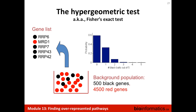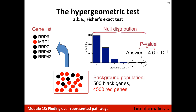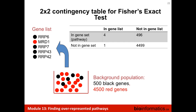In most cases you would observe zero black balls, sometimes one, and then there's a long tail of more rare events. The p-value is the sum of your observation — for example, four black out of five — plus anything more extreme. A p-value is always a sum of probabilities. When you do this analysis in software like R, you will most likely compile a contingency table — a two-by-two table measuring whether your gene is in a pathway or not. This is the standard input you provide to Fisher's exact test, which gives you a p-value in response.